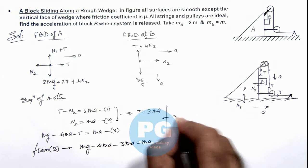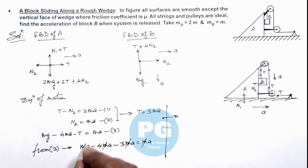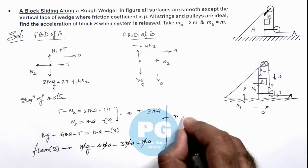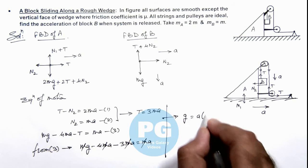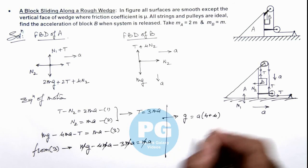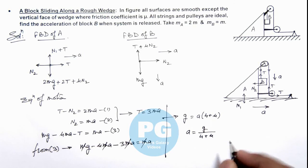So if we continue from here, m also I can cancel out, and this will give us g = a(4 + μ). So on simplifying, the value of acceleration I am getting is g/(4 + μ). So the acceleration of block A is g/(4 + μ).